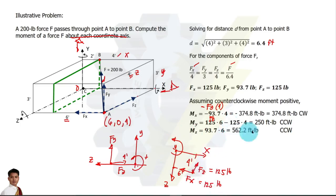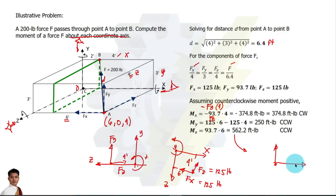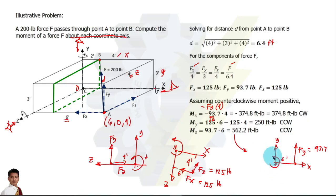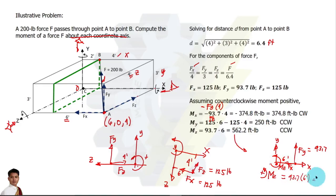The moment arm for Fx is 4 feet. Lastly, for the moment about the z axis, we place our line of sight along the z axis and view the top with the x and y axes visible. The force component Fy equals 93.7 and its distance from the origin is 6 feet. Assuming counterclockwise positive, the moment about z equals 93.7 multiplied by 6 feet, which equals 562.2 foot-pounds.